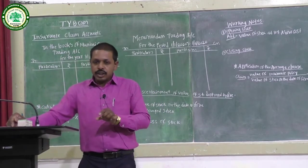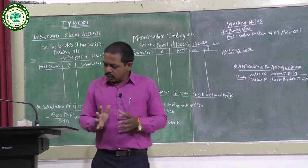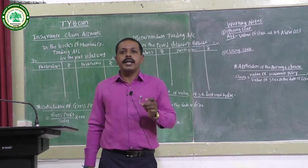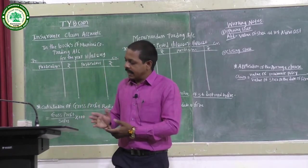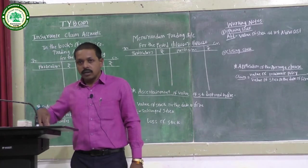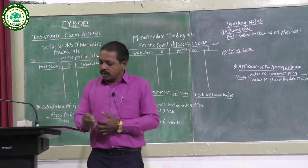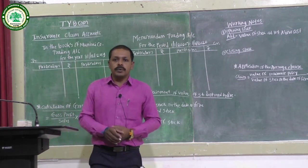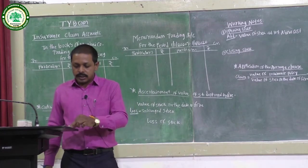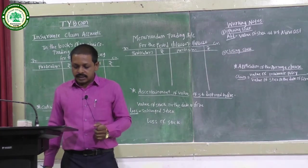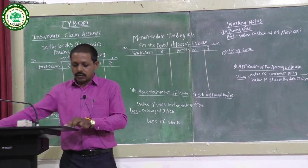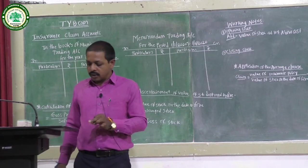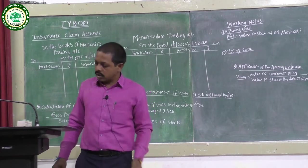The salvage stock on the date of fire amounts to Rs.4,000, and the policy amount is Rs.21,000. Now for the working note on stock: the opening stock amount is Rs.44,000 and the closing stock is also to be adjusted. The problem mentions figures for both, so we proceed with the adjustment.